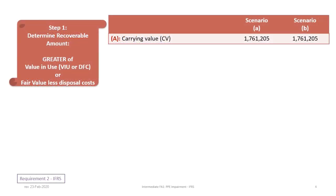Under IFRS, the first step is to determine the recoverable amount. This is not the same thing as the recoverability test under ASPE. How we determine the recoverable amount is by taking the greater of the value in use, also known as the VIU, which is the discounted future cash flow, or the fair value less cost to dispose — less the disposal costs. And so here is the difference versus ASPE.